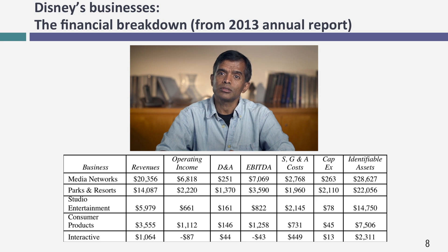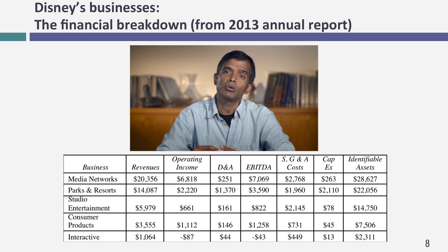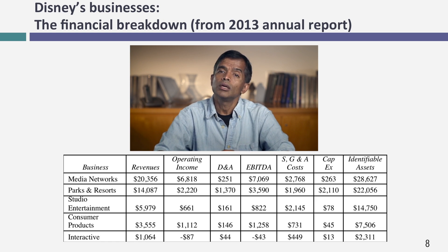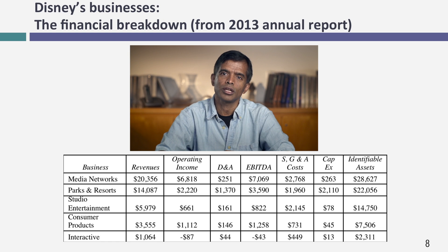The second business is the theme park business — Disney World, Disneyland, Euro Disney, Tokyo Disney, and the very beginnings of Hong Kong Disney in 2013. The third is the movie business, which stretches across Disney animated studios, Pixar, Marvel, and LucasArts. The fourth is the consumer product business — licensing revenues from characters for toys and other products. And finally, there's interactive gaming, Disney's newest business: apps and games for computers, smartphones, and other devices.